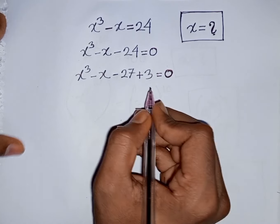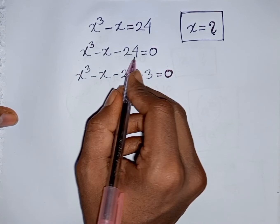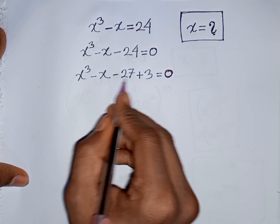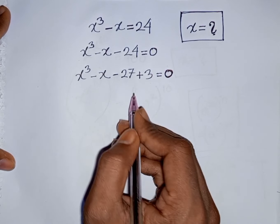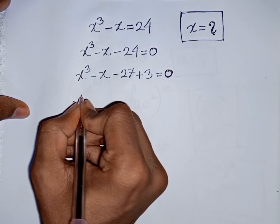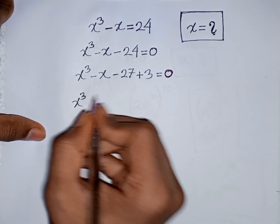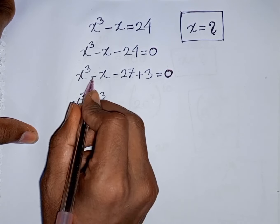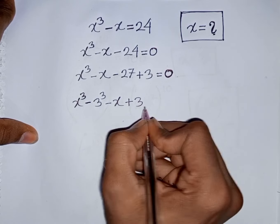How to understand this? Pay attention here. The nearest cubic number to 24 is 27, so you can write -24 as -27 + 3. Now, x³ - 27 is the same as x³ - 3³, then minus x plus 3, is equal to 0.